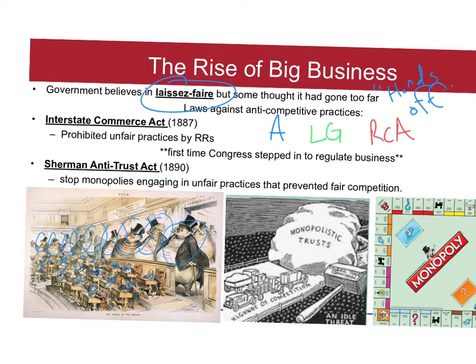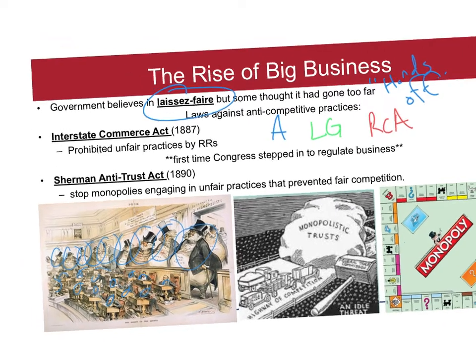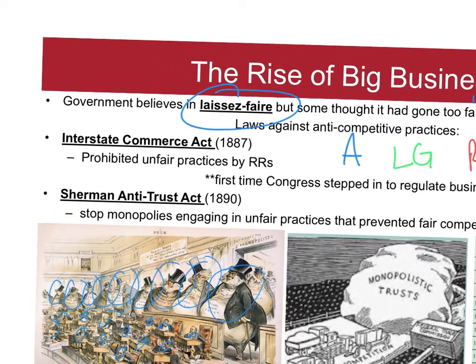Since railroads were the first giant corporations engaging in unfair practices, the government said enough was enough. Congress passed the Interstate Commerce Act, primarily aimed at the railroads.